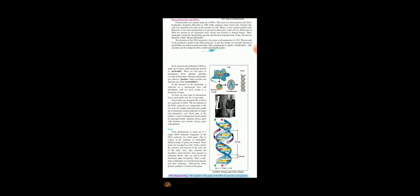Now, let us see what do you mean by a gene. Each chromosome is made up of a single DNA molecule. Segments of DNA molecule are called genes. Due to the variety in the sequence of the nucleotides, different kinds of genes are formed. These genes are arranged in a line. Genes control the structure and function of the cells and of the body.